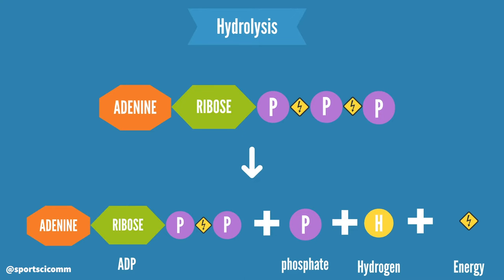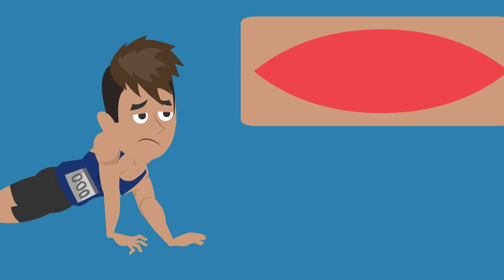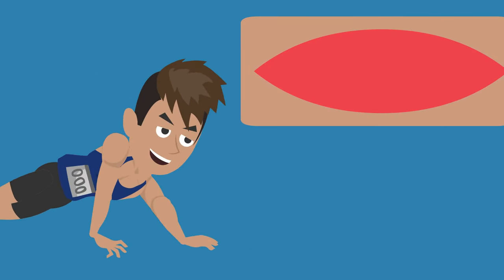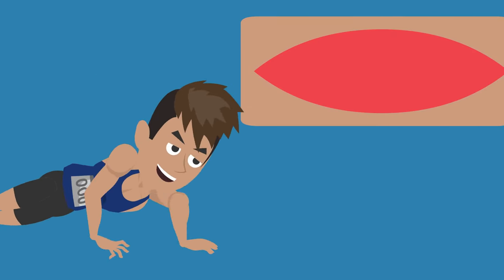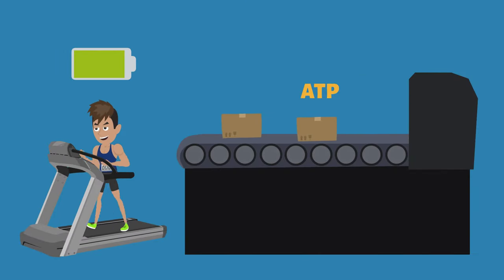The hydrolysis of ATP occurs without oxygen, meaning that energy is released rapidly. This released energy stimulates our muscle fibers to contract, which is required for exercise. The body requires a constant and continuous supply of ATP.